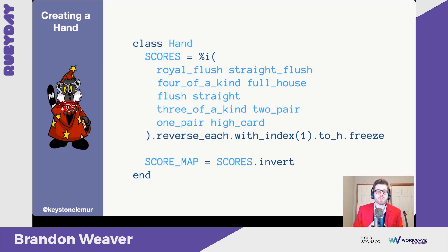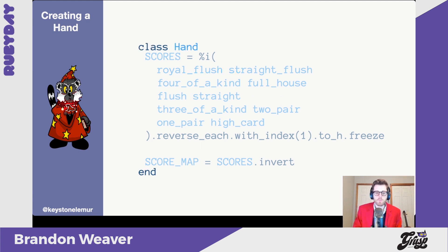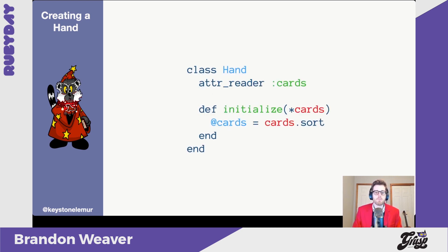After we have those scores, we want a list in reversed order to see that royal flush has the highest score of ten, all the way down to high card which has a score of one. The score map just inverts that — ten points is royal flush, one is high card. This will be very useful for later. Now let's take a look at how a hand is actually constructed. A hand is a container of cards. You might notice one particular piece of code that's going to be very important: sort. But we'll leave that alone for now — just keep that in mind.